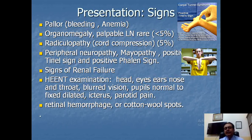Continuing with the presenting features and signs: on examination, the patient may have pallor because of anemia, and the patient may have bleeding because of thrombocytopenia. Coagulation cascade is rarely implicated in bleeding; thrombocytopenia is the most common underlying factor. Organomegaly is common, and lymph nodes may also be found. The organs most commonly involved are the liver and spleen, and splenomegaly is most frequently encountered.